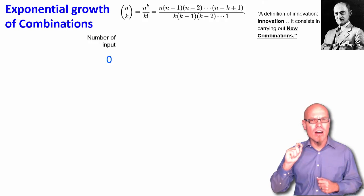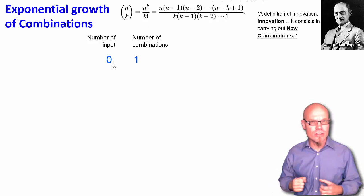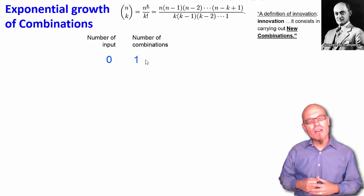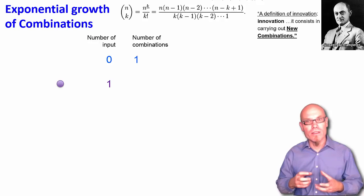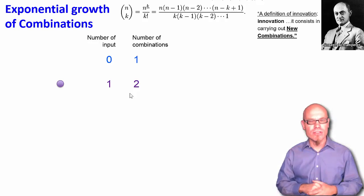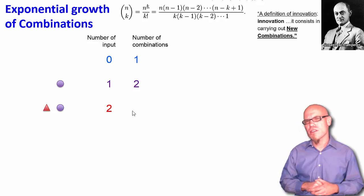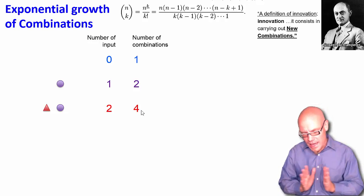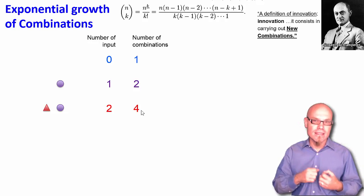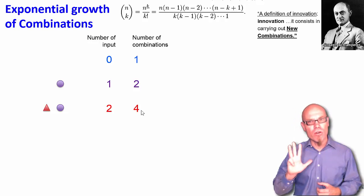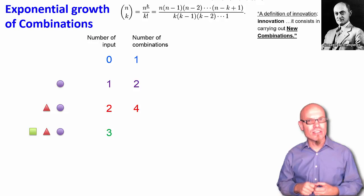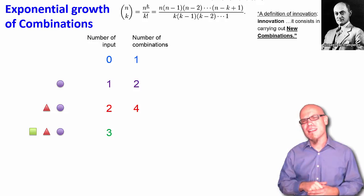So let's say we first of all start with nothing. The number of combinations we can do with it is one. We actually only have one choice and that is to do nothing. Now if we have one input, we have one thing, we have already two choices. We can either take it or not. Now if we have two things, for example, we have a triangle and a circle, we already have four choices because we can either not take anything or we can take both or we can take the triangle or we can take the circle. So there are four number of possible combinations. Now if we have three inputs, a square, a triangle and a circle, how many combinations do we have? Why don't you go ahead and count it?